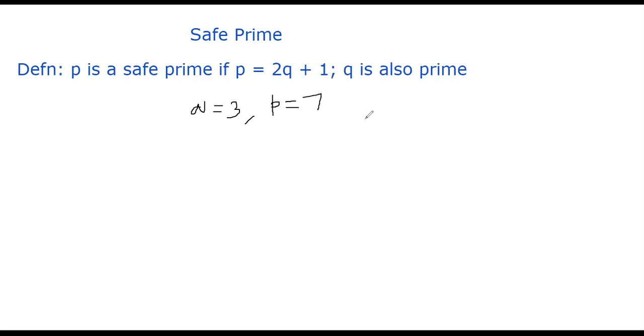Let me take an example that is not a safe prime. Let's say p equal to 13. 13 is a prime, but it's not a safe prime, because you cannot write 13 as a combination of 2 times q plus 1, assuming q is also prime. Although 13 is 2 times 6 plus 1, but 6 is not a prime. So 13 is not a safe prime.